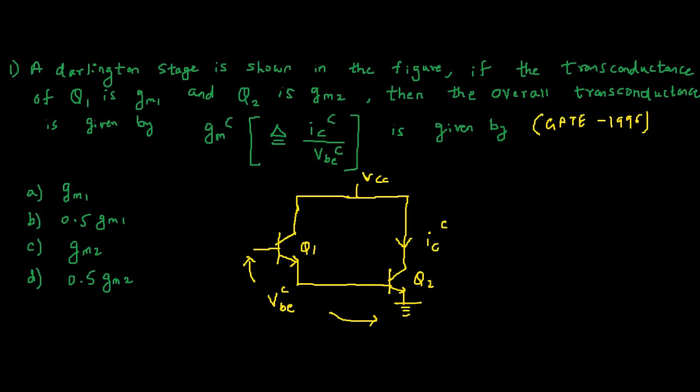We have to find out what is VBE collective and IC collective. We need to take the ratio of IC collective upon VBE collective. That gives us the GM of this overall Darlington pair.